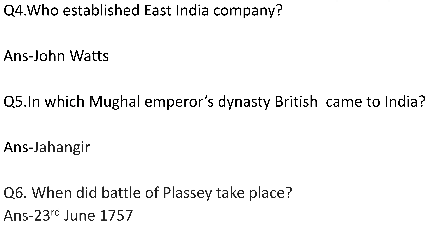Question number 4: Who established the East India Company? Answer is John Watts. Question number 5: In which Mughal Emperor's dynasty did the British come to India? Answer is Jahangir.